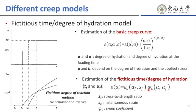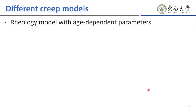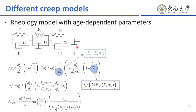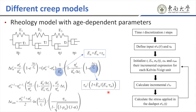In the rheology model with age-dependent parameters used in this study, a generalized Kelvin-Voigt model composed of three Kelvin-Voigt units and one additional dashpot was employed. The Kelvin-Voigt units account for short-term creep while the additional dashpot accounts for long-term creep. The incremental basic creep strain at early age can be calculated based on the three equations shown in the slide. The flow chart explains the calculation steps which estimate the incremental strain and stress at each time step. Note that in this model, the stiffness of the springs and the viscosity of the dashpots are all age-dependent.